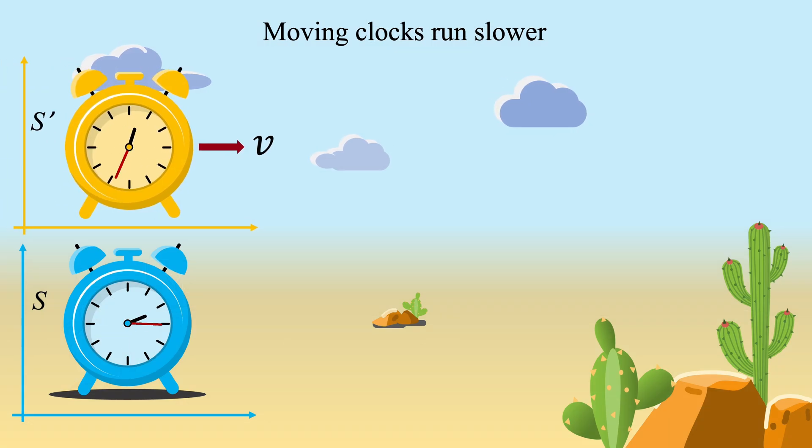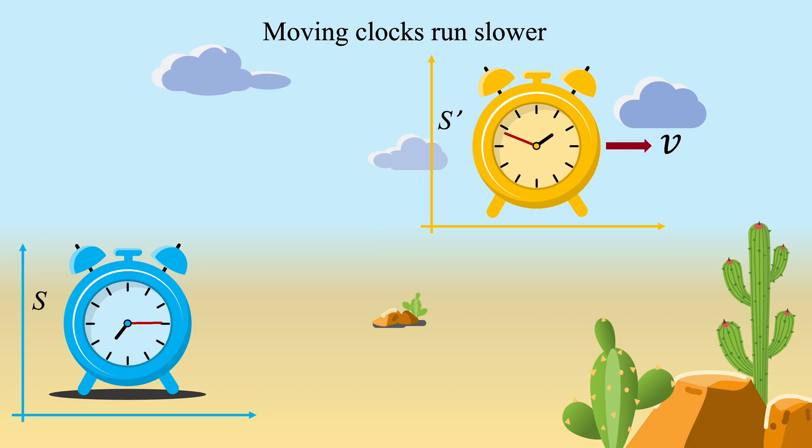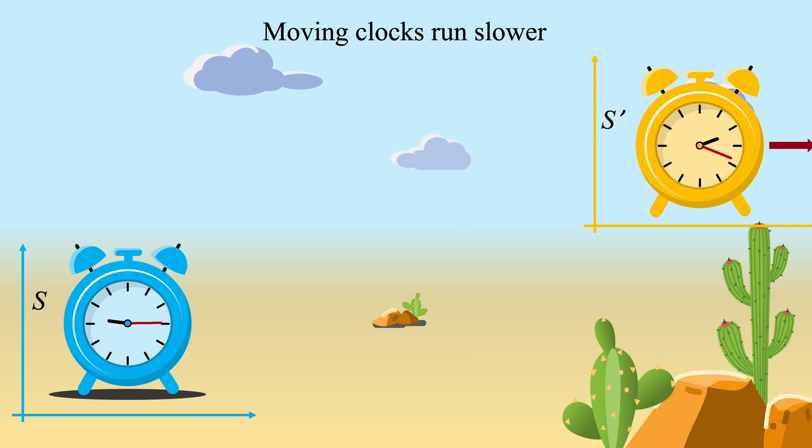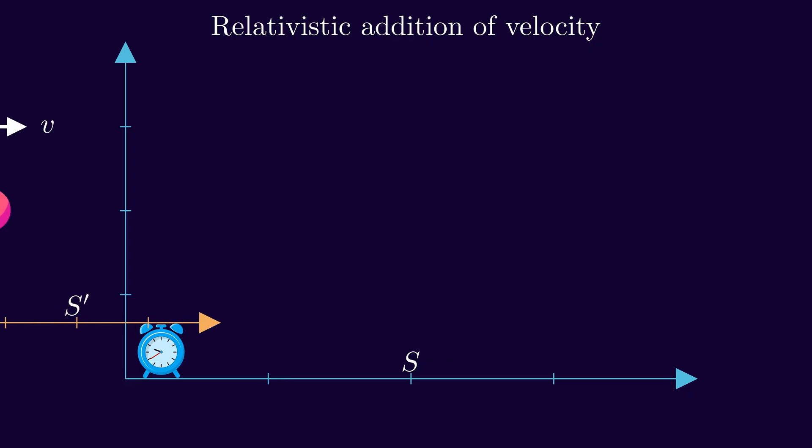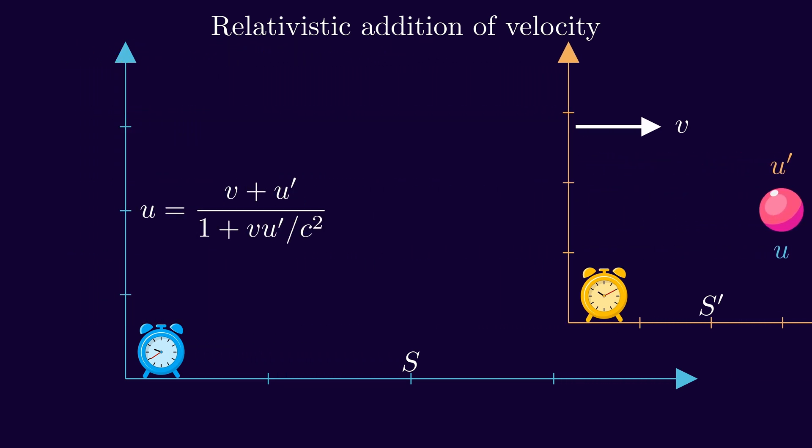While Newtonian mechanics assumes absolute time, special relativity introduces the concept of time as relative to a specific reference frame. The Newtonian velocity addition rule is superseded by Einstein's formula to accommodate the constancy of light speed.